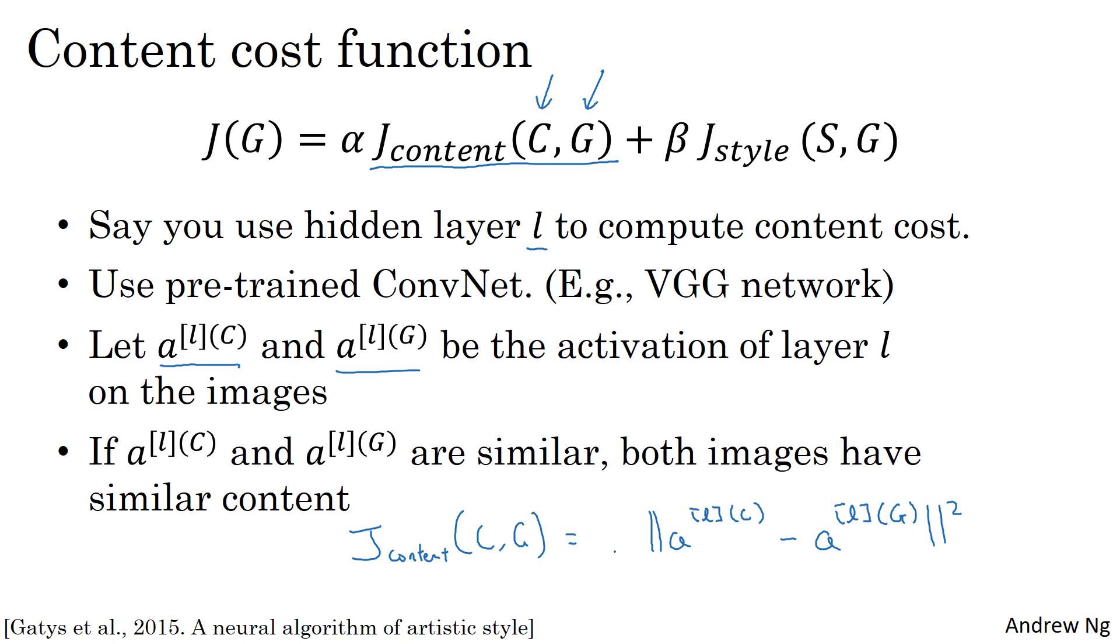You can have a normalization constant in front or not, one half or something else. It doesn't really matter since this can be adjusted by the hyperparameter alpha.